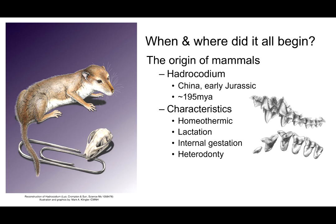Heterodonty gave mammals an evolutionary advantage that served them well. But there were some other things that likely really helped them too, not the least of which is the bad fate that met the dinosaurs. Have you had a chance to listen to the Radiolab podcast about this — Dinopocalypse? Such a good listen. Be sure to do that as part of this module.